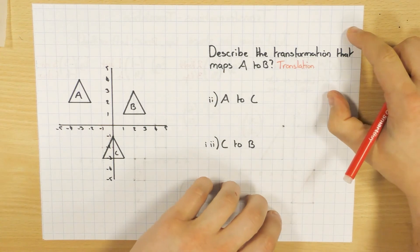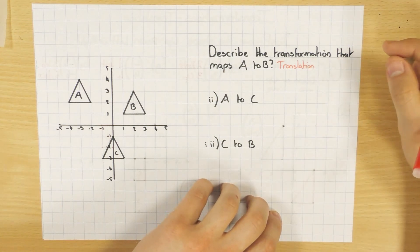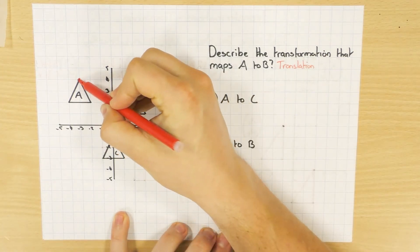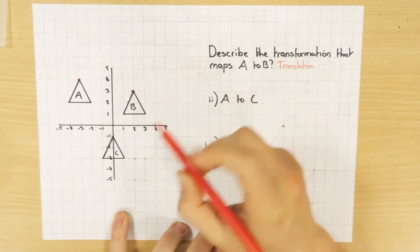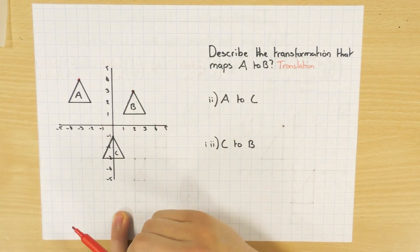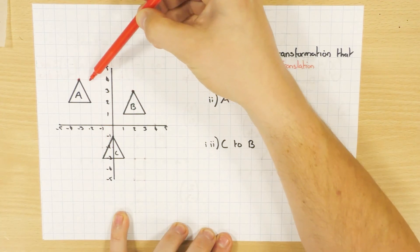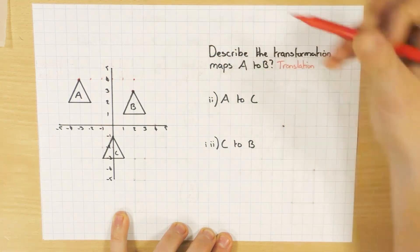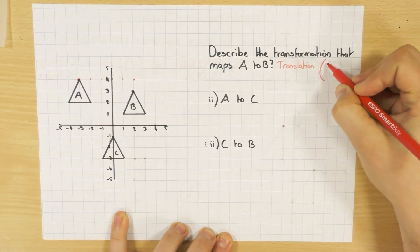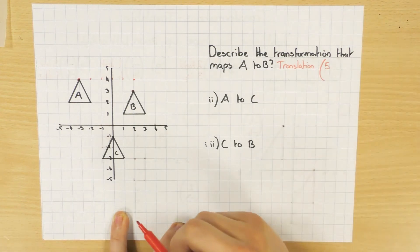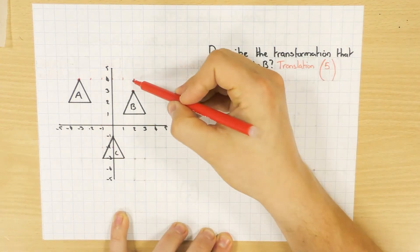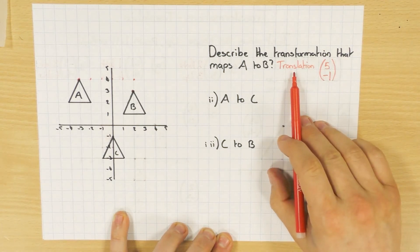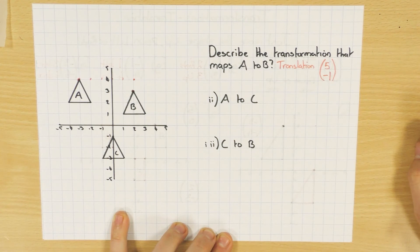What information do we need to describe a translation? We need a column vector — that's the second mark. Choose the same point on both shapes and count: 1, 2, 3, 4, 5 across to the right, so that's positive 5 for the x value, and then 1 down, so that's minus 1. One mark for saying it's a translation, the other mark for the column vector.